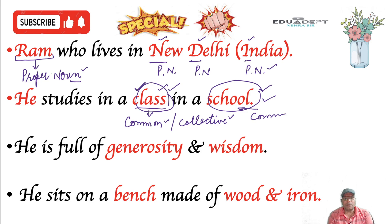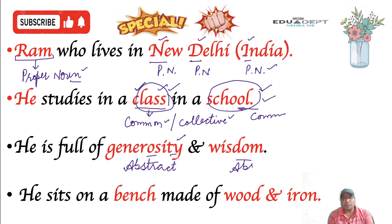He is full of generosity — yaani dayaluta. Agar hamare kisi bhi word ke last mein 'ty' dekhne ko mile, to woh apna abstract noun hoga. Generosity ke andar kiya hai? Abstract noun hai. Aur wisdom bhi apna abstract noun hai — yaani bhavvachak sangya. To bhavvachak sangya ke saath koi article ka use nahi hota, jabki collective noun aur common noun ke saath hum article ka use karte hain.